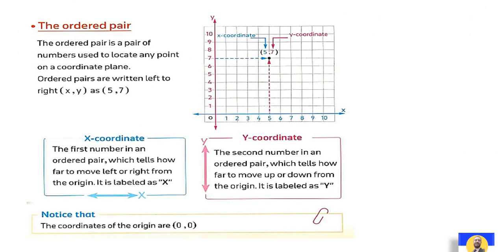In the coordinate plane, we draw two axes: the first is the x-axis and the second is the y-axis. Any point we draw inside the coordinate plane must follow the ordered pair rule. The ordered pair is written with two brackets — the first number is x and the second number is y. We cannot swap x and y.